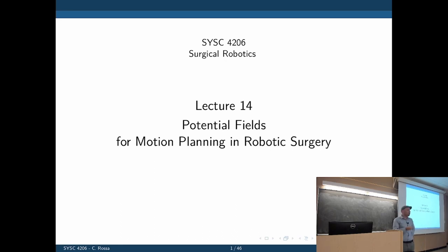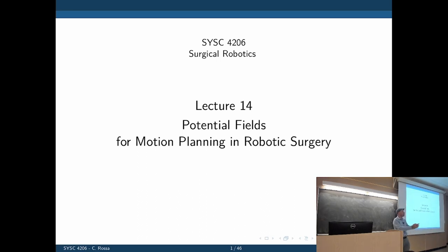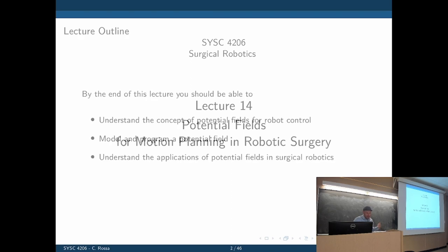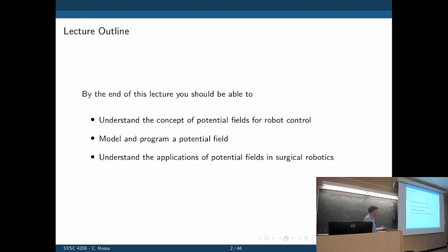You're going to convert obstacles and goals into a field — a two-dimensional field of forces that are applied to the robot. When you approach an obstacle, the robot will receive forces that repel it. When the robot has a goal, we want forces that attract the end effector towards that goal. It's a bit complicated, but the implementation in MATLAB is relatively straightforward.